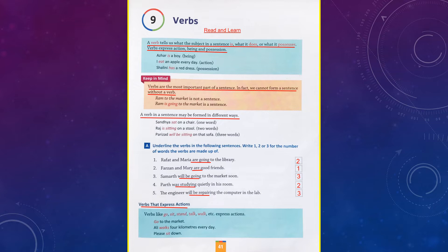Let's start with the first one. 'Rafat and Maria are going to the library.' There are two verbs — are and going — so I have written two in the box and underlined are and going. Sentence number two: 'Farzan and Mary are good friends.' Are is the only verb, so I have underlined are and written one in the box. Sentence number three: 'Some earth will be going to the market soon.' There are three verbs in this sentence — will, be, and going — so I have written three in the box.